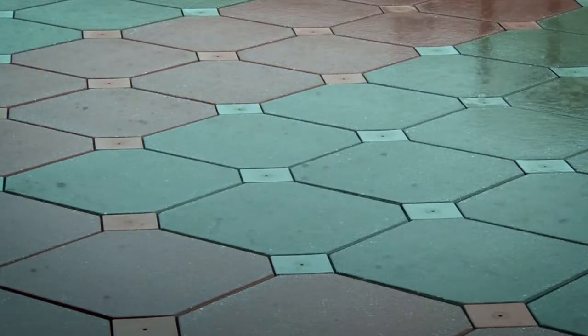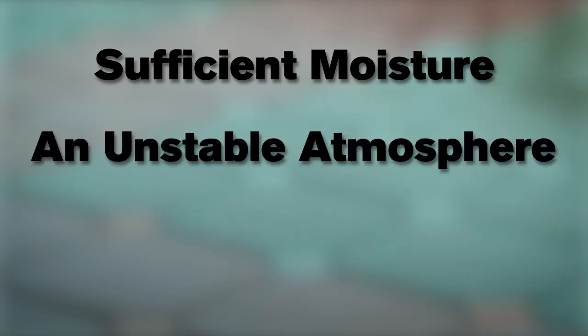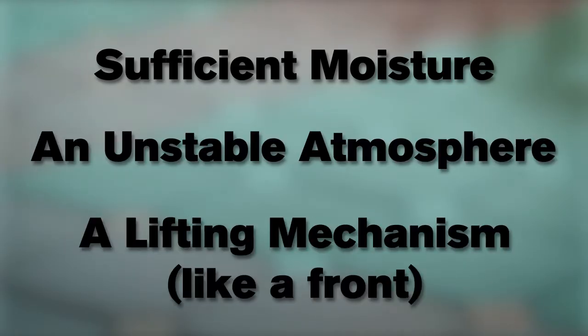Thunderstorms need three main ingredients to form: sufficient moisture, an unstable atmosphere, and a lifting mechanism, like a front, to start it all.